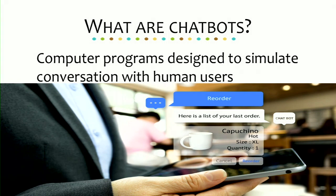This is a very simple chatbot, but it's still very complex in the back end because it understands context of what you're talking about. It knows about time — it's not presenting an order that you ordered maybe a year ago. This is something that you did maybe five minutes ago or ten minutes ago or twenty minutes ago.